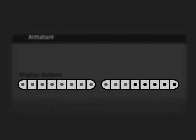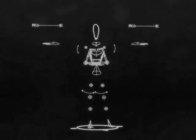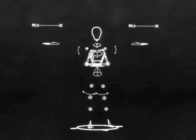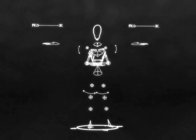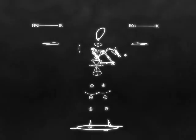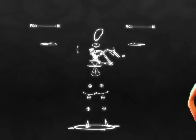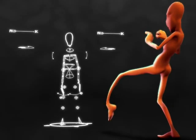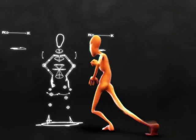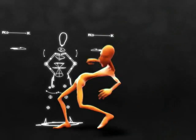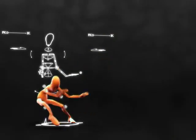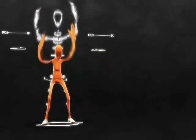The armature Kandy Skell has controls on layers 1 through 10. Each layer controls one part or function of Mancandy's body.